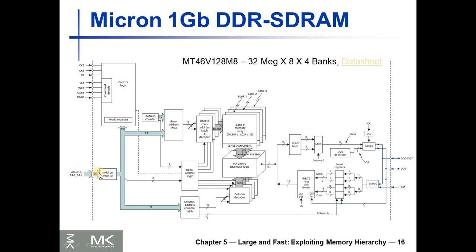There is a 16-bit address: at one time, 14 bits are used to select the row and 2 bits are used to select the bank. Then this bus is used to send the column address, which selects one of the 1K columns. One bit is used to select one of the two halves of each cell, since each cell is 16 bits but the external data bus is 8 bits wide — this bit selects the lower or upper half.